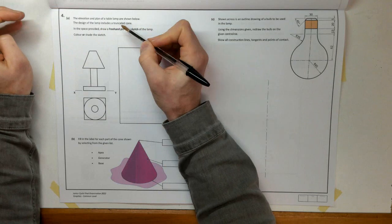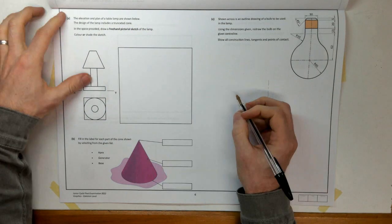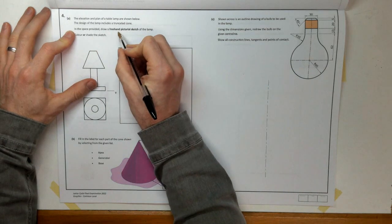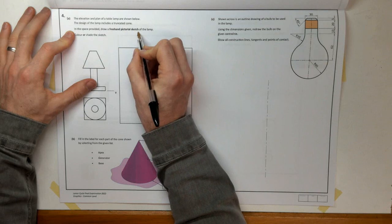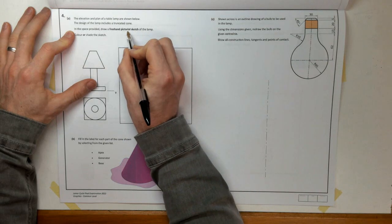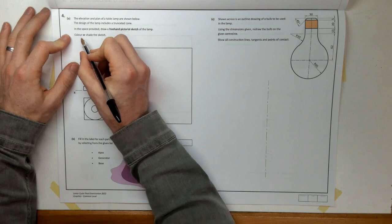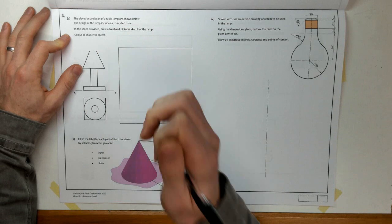The design of the lamp includes a truncated cone, and in the space provided they want us to draw a freehand pictorial sketch, so a freehand 3D sketch of the lamp. Pictorial being 3D, so we can't just redraw our elevation. And then colour or shade the sketch, so make sure we get those handy marks.